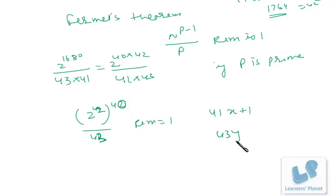So the final remainder is 1 raised to 40, that means 1. That means the number is in 43y plus 1 format. That means if you divide the number by 41, then also remainder is 1; if divided by 43, then also remainder is 1.